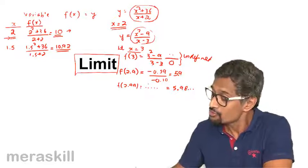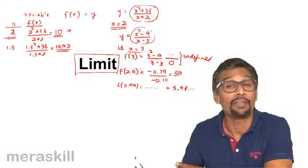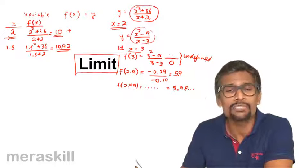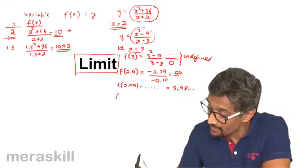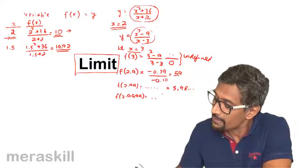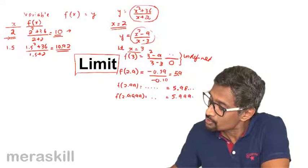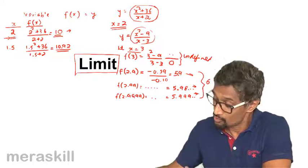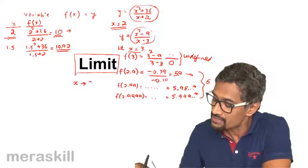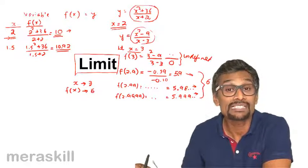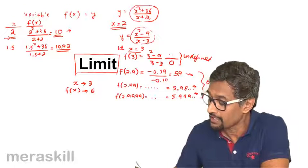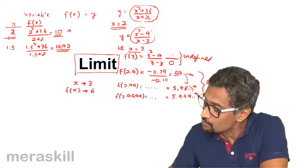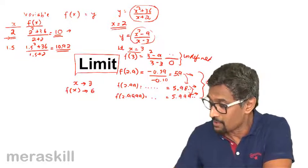You find that when the value of x is 3, the function is undefined, but as x comes closer — not equal to 3 but just less, like 2.999 or 2.9999 — the values are not undefined but are becoming closer and closer to 6. So we say that as x approaches 3, the function approaches 6.